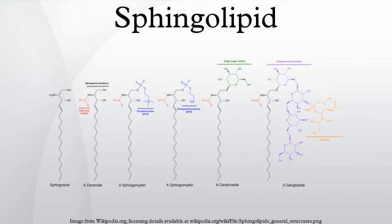Sphingolipids are commonly believed to protect the cell surface against harmful environmental factors by forming a mechanically stable and chemically resistant outer leaflet of the plasma membrane lipid bilayer. Certain complex glycosphingolipids were found to be involved in specific functions such as cell recognition and signaling. Cell recognition depends mainly on the physical properties of the sphingolipids, whereas signaling involves specific interactions of the glycan structures of glycosphingolipids with similar lipids on neighboring cells or with proteins. Recently, simple sphingolipid metabolites such as ceramide and sphingosine 1-phosphate have been shown to be important mediators in signaling cascades involved in apoptosis, proliferation, stress responses, necrosis, inflammation, autophagy, senescence, and differentiation.